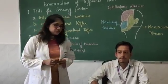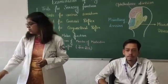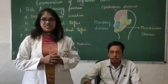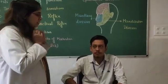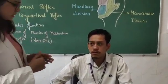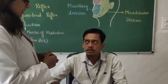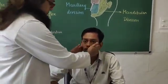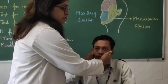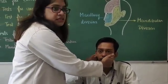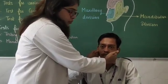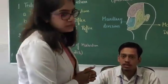To check the functions of the masseter and temporalis muscles, we ask the subject to clench their teeth. We can feel the prominence of the masseter and temporalis muscles on clenching. On clenching the teeth, you will feel the prominence of both the temporalis and masseter muscles.